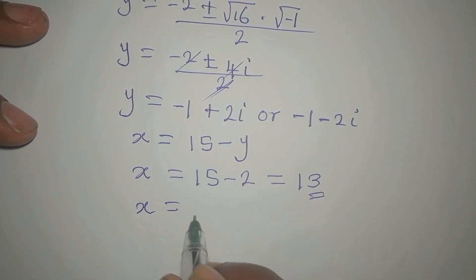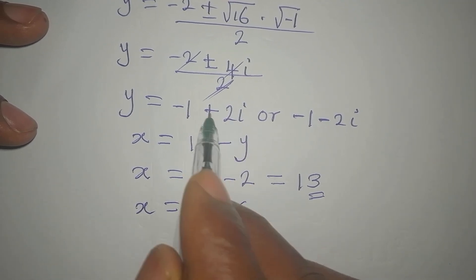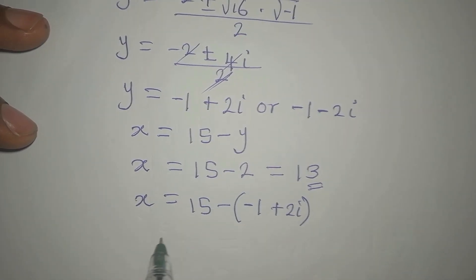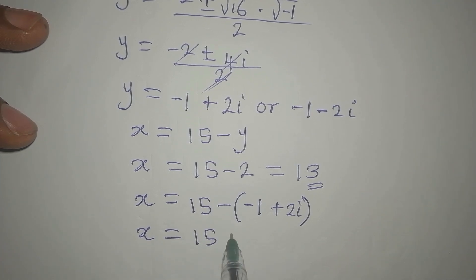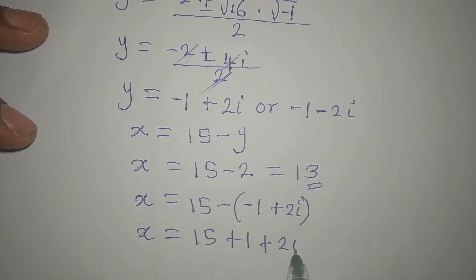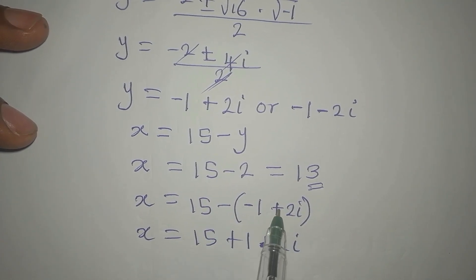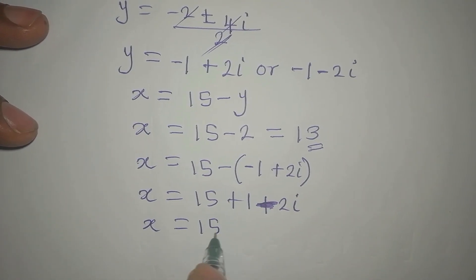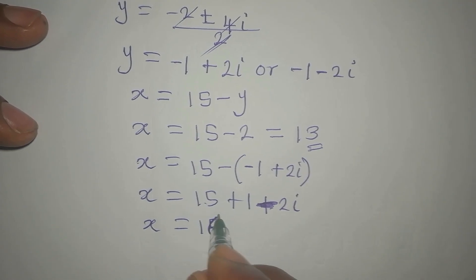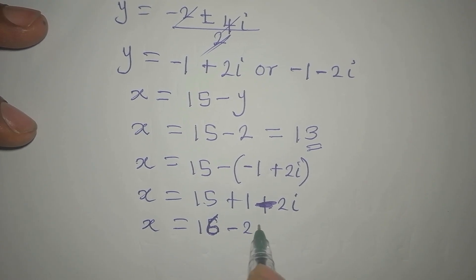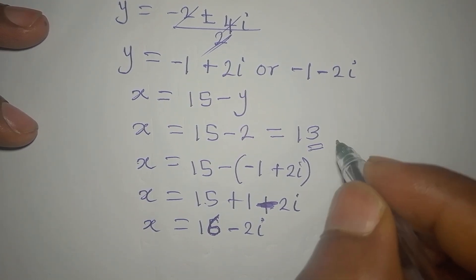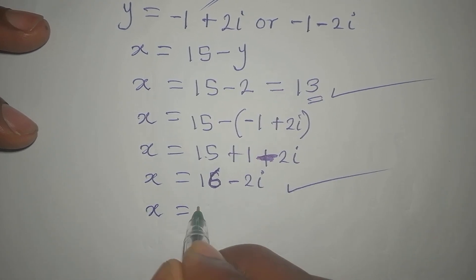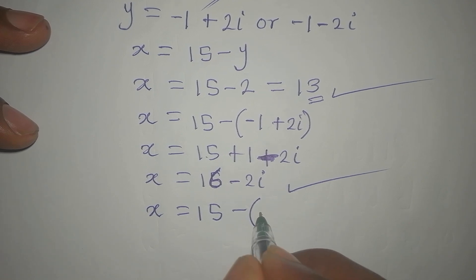For Y equals negative 1 plus 2i, X equals 15 minus (negative 1 plus 2i), which becomes 15 plus 1 minus 2i. That gives X equals 16 minus 2i. So here we have another solution.